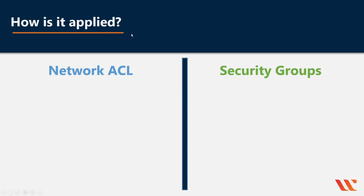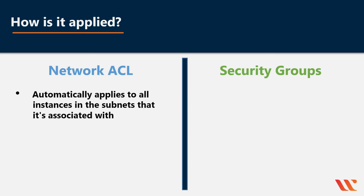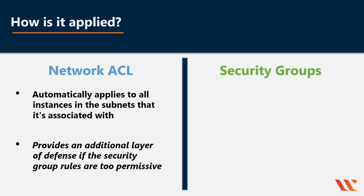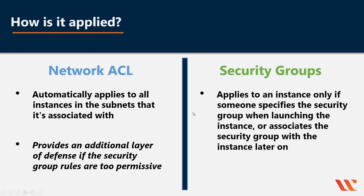One final key element is how these virtual firewalls will be applied. With a network ACL, they automatically apply to all instances in the subnet they're associated with, providing an additional layer of defense if the security group rules are too permissive. With security groups, they're applied to an instance only if someone specifies the security group when launching the instance, or associates the security group with the instance later on — something to watch out for.